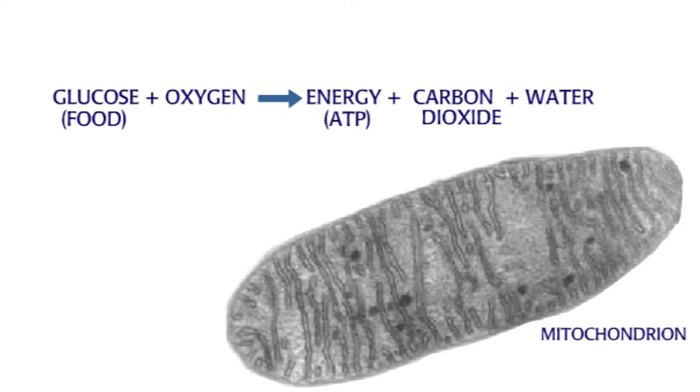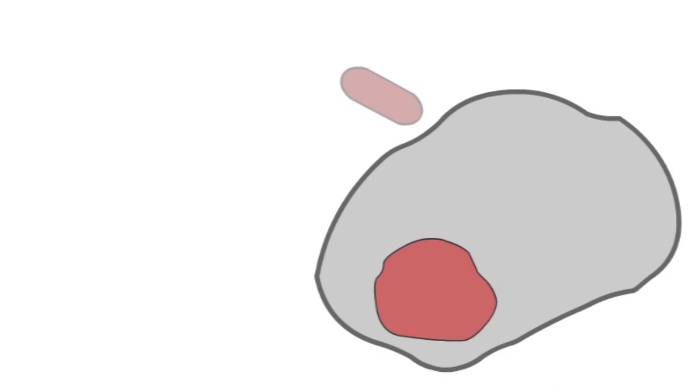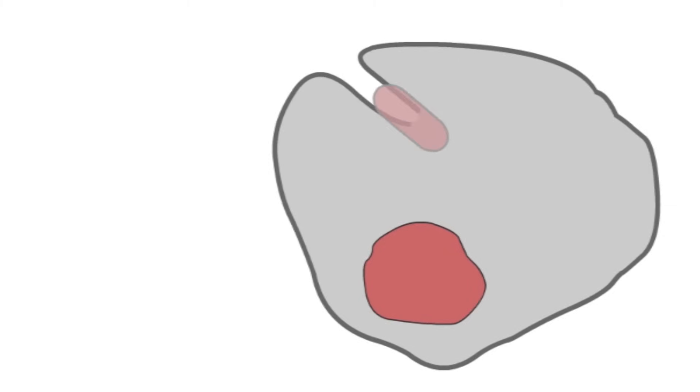Mitochondria carry their own DNA. Mitochondria were once free-living bacteria that were engulfed by an ancestor of eukaryotes, but not digested. The bacteria and the larger cell established a symbiotic relationship, in which the larger cell provided protection while the bacteria produced food.